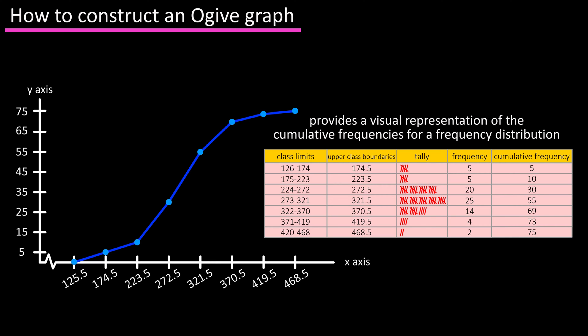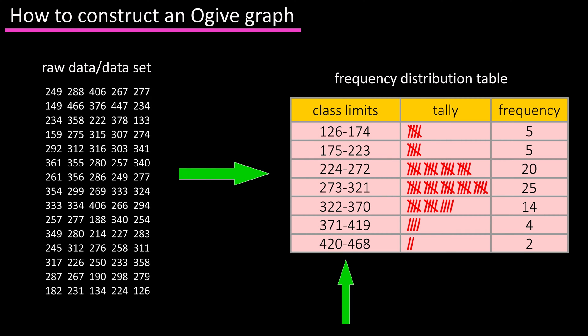In a past video we discussed what a frequency distribution is. Real quick, you have a data set, you break the data down into classes or intervals, you tally up how many data points are in each class, and you write that number down, which is the frequency.